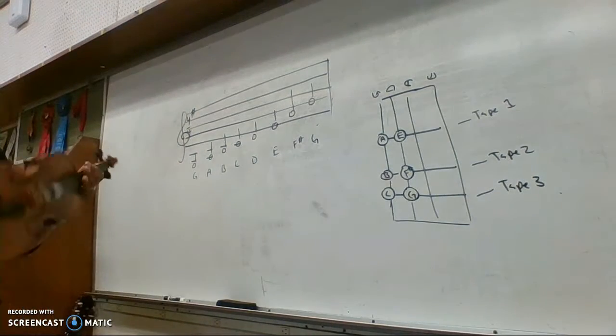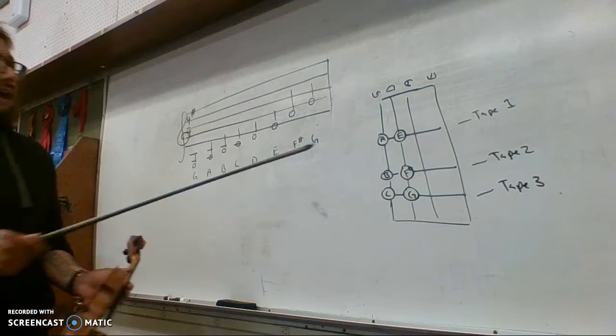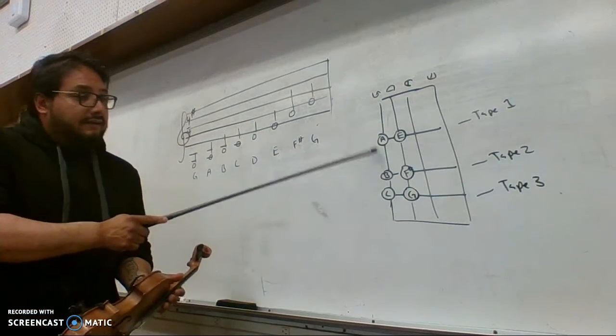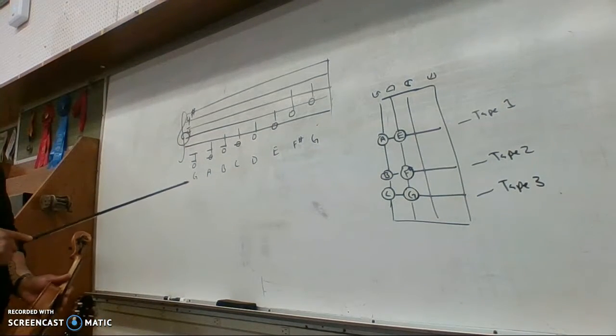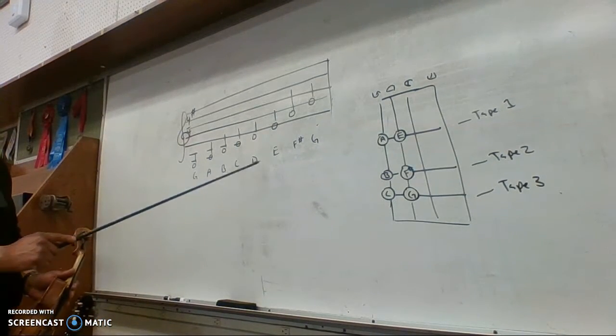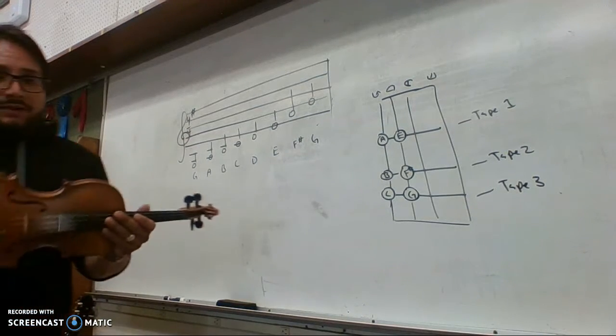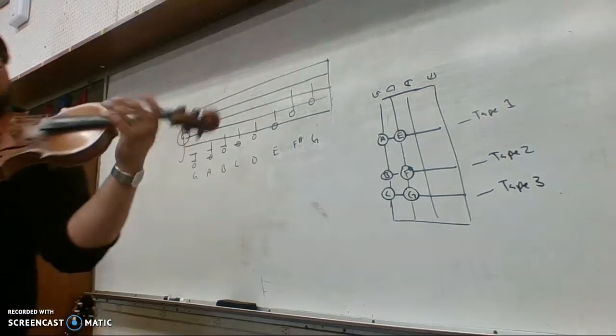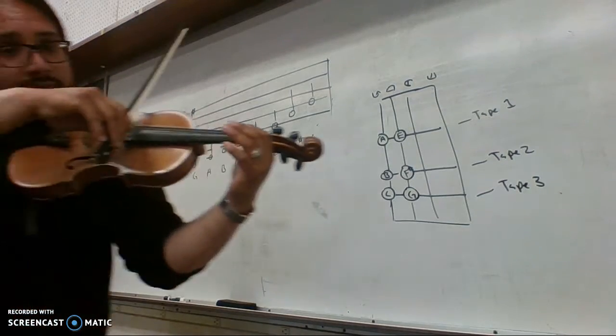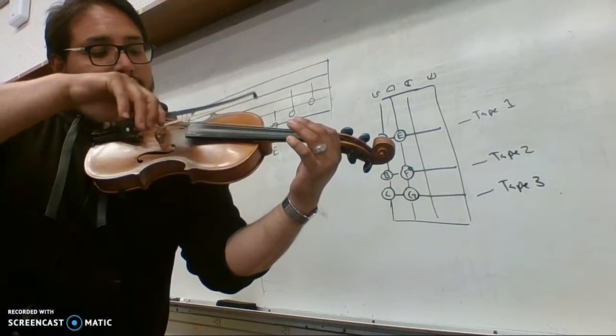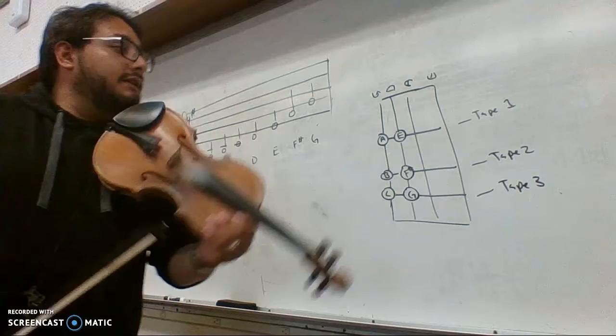Alright, we're going to go over the G scale for violin. We have here the violin fingerboard and the notes starting with G, A, B, C, D, E, F sharp, and G, starting with the low G, which is going to be the open G.